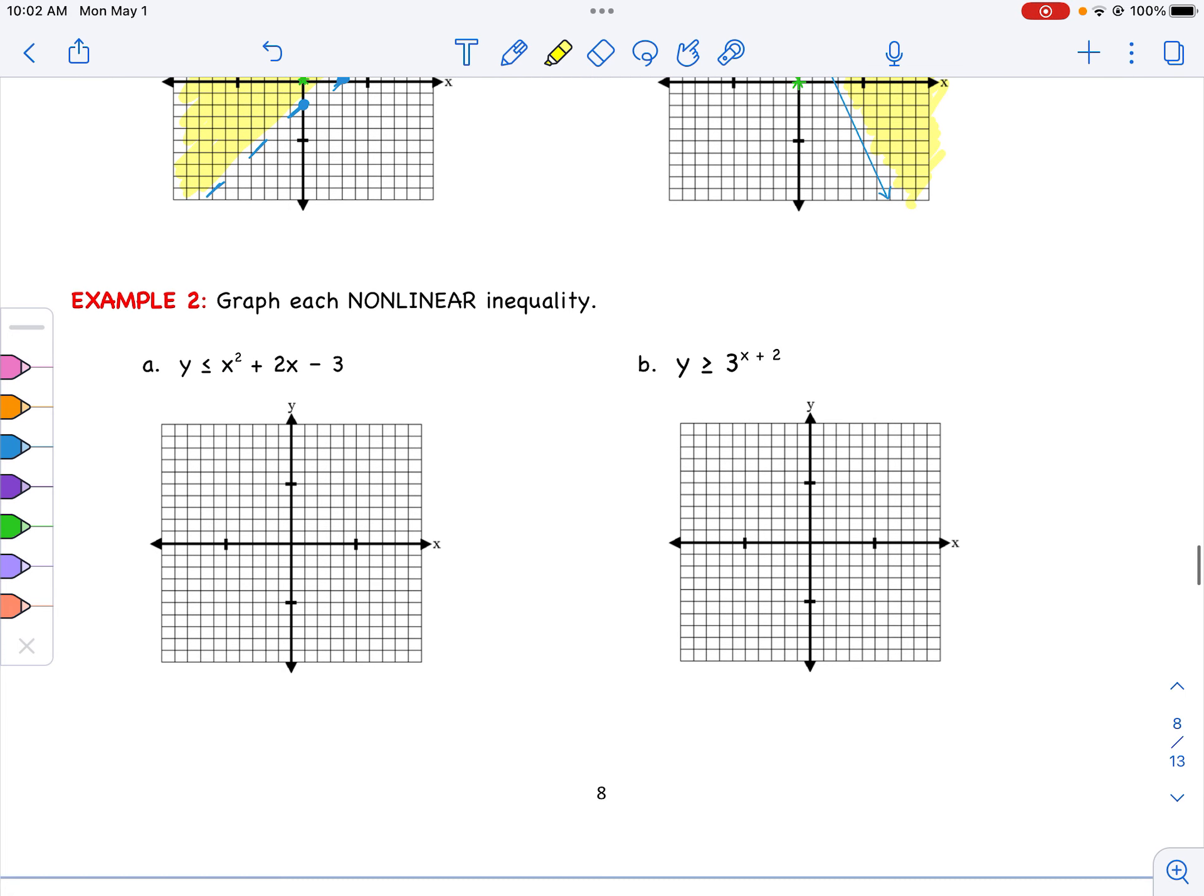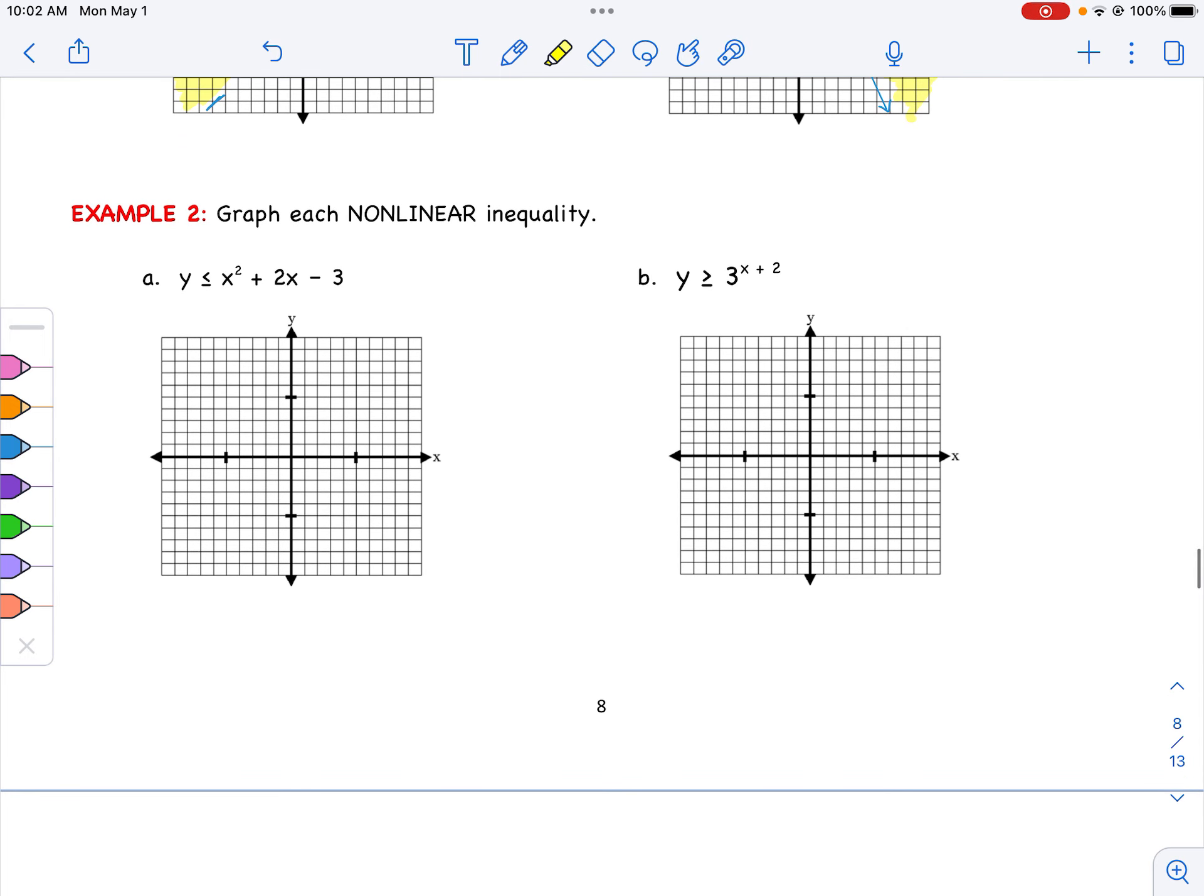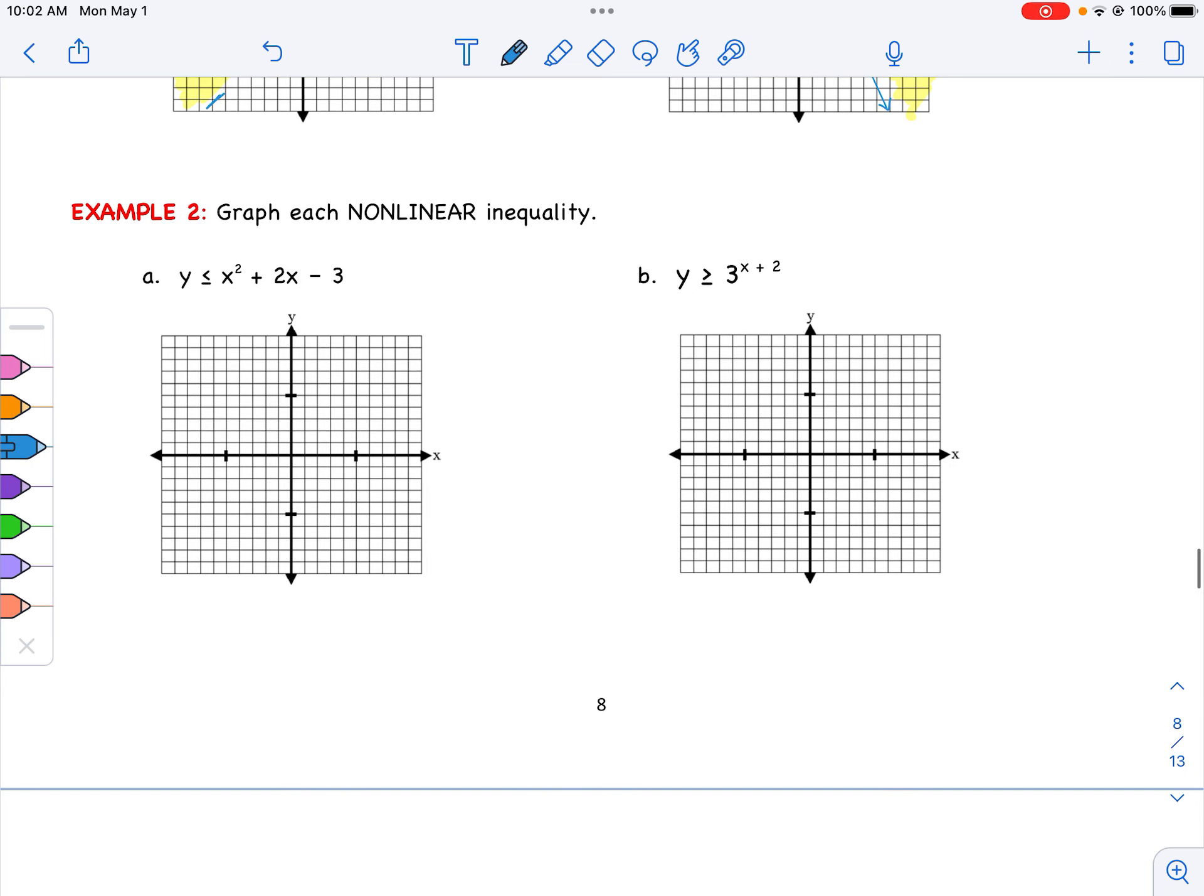Next two, we're doing nonlinear inequalities. First thing you have to do is figure out, what is the shape? The first shape here is going to be a parabola. And my second shape is going to be that exponential. Looking at these, we need to find some information. I notice it's less than or equal to, so I'm going to put the word solid. This one's greater than or equal to, so again, I'm going to put the word solid just for myself.